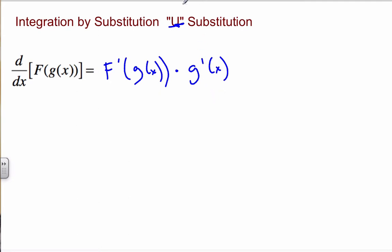And what we would want to do to find this U is we want to find U to be the inside function. We want U to be our G of X, because we have to look for the derivative of it, and then we can substitute it away, basically.